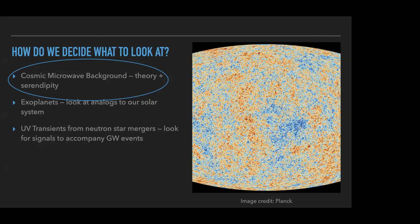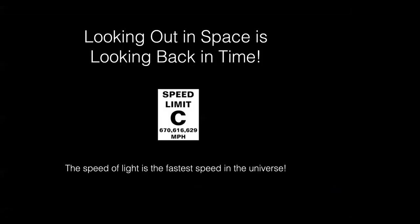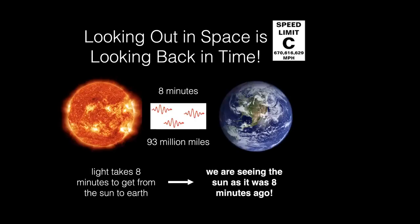A key thing to appreciate is that we're very lucky the speed of light is finite. The fact that the speed of light is finite means that if you're looking out in space at things far away, you're actually looking back in time. This allows us to see the universe not just as it is today, but as it was billions of years ago. The sun is 93 million miles away, and it takes 8 minutes for light to travel from the sun to earth — so we're seeing the sun as it was 8 minutes ago.